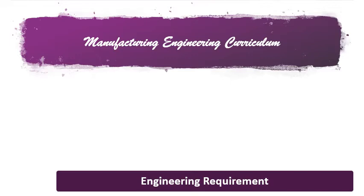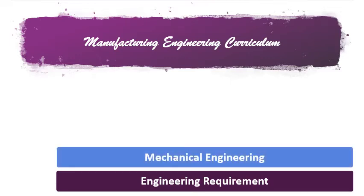After completing these, we start to have some of the mechanical engineering requirement courses, because Manufacturing Engineering is part of the mechanical engineering discipline. We start to study courses about heat and the flow of fluids. Some manufacturing courses are also considered basic mechanical, so we start with mechanical engineering drawing.